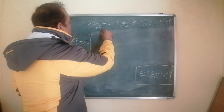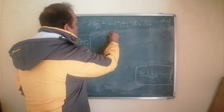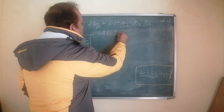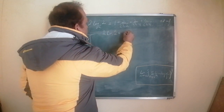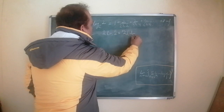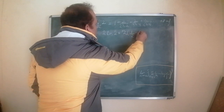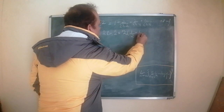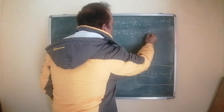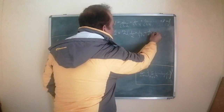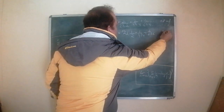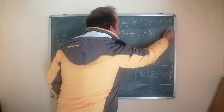Now this can be rewritten as natural log of 2 is equal to one half plus 1 upon 6 cubed minus 6, and so on, ad infinitum.